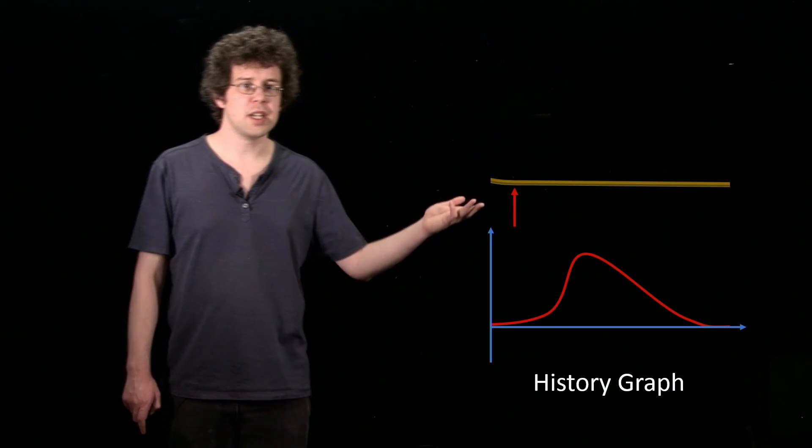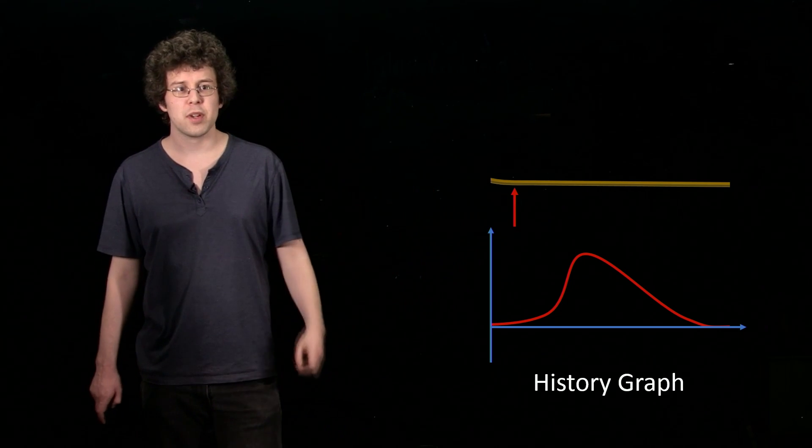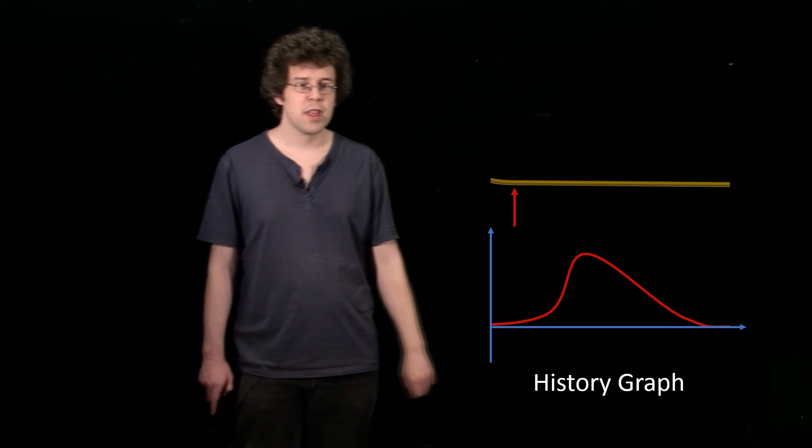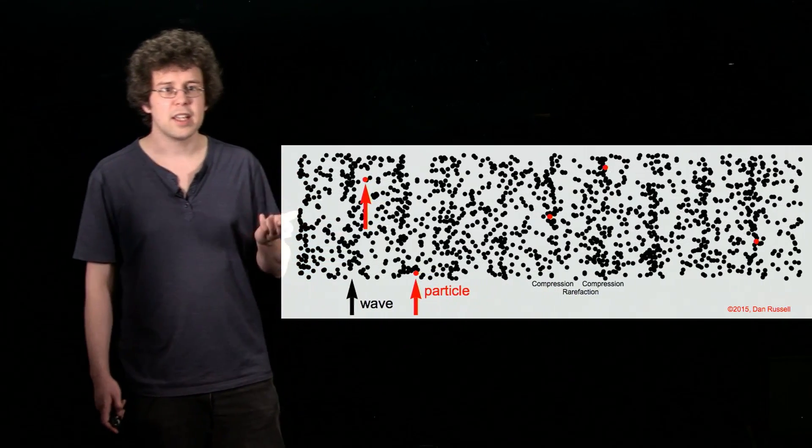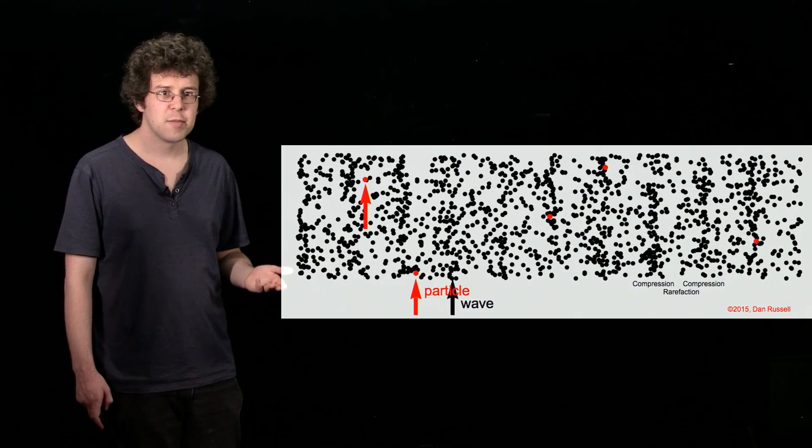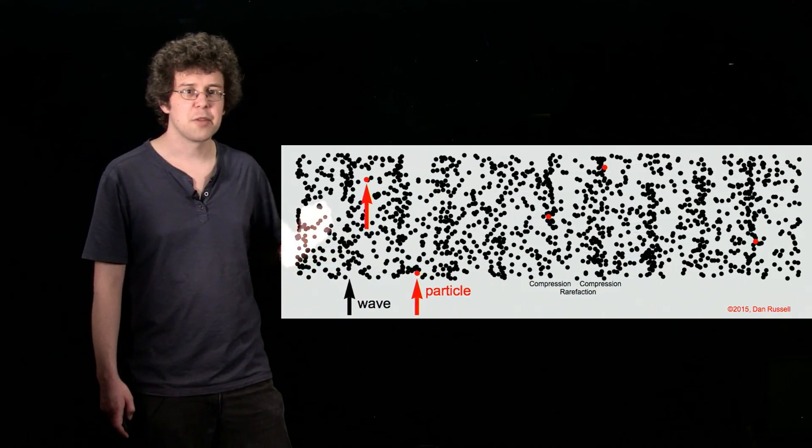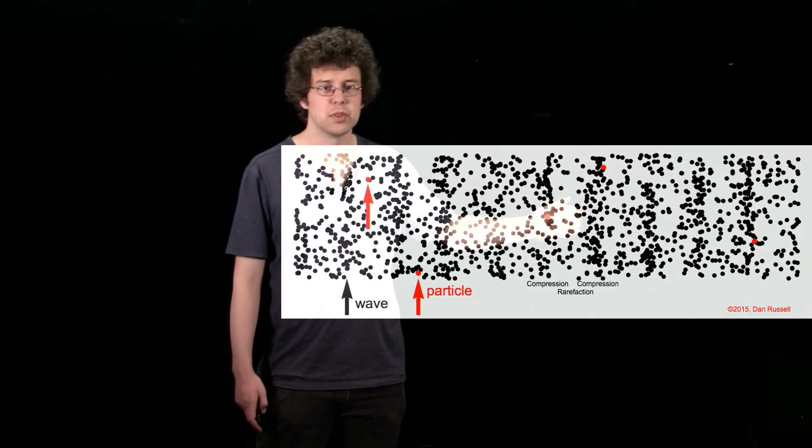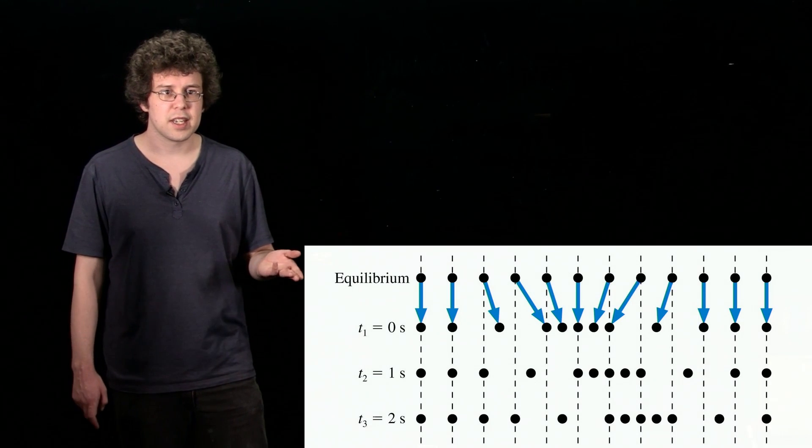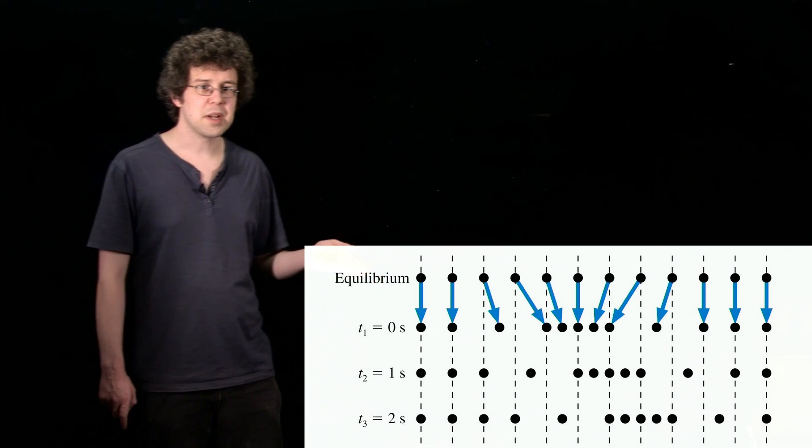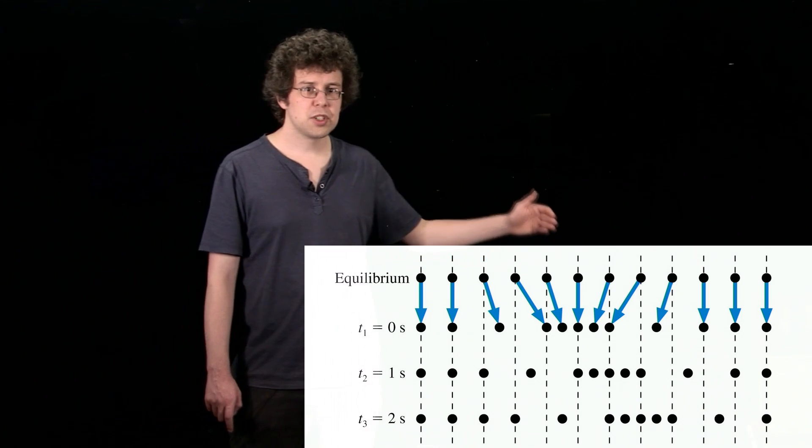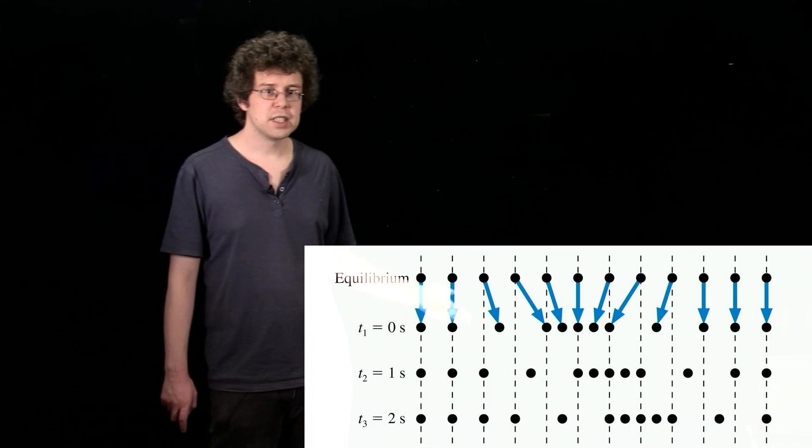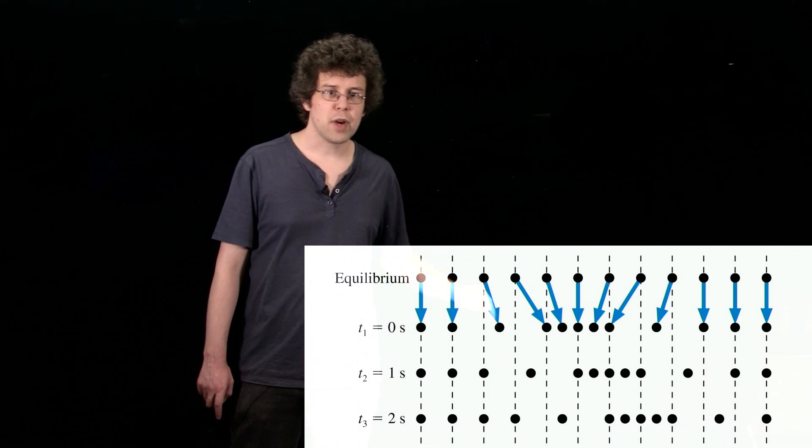This is all well and good for a transverse wave on a rope. The snapshot graph is physically a photograph of our wave; the history graph is similar but shows motion over time. How can we apply this to a longitudinal wave? Here's an example of a longitudinal wave - it's a bit hard to make out, but this is essentially a sound wave. You can see particles moving left and right while the wave propagates toward the right. Let's take some snapshots of what our medium looks like. We have initially evenly spaced points, and at time t equals zero, some points are displaced from equilibrium. Over time our wave propagates along.